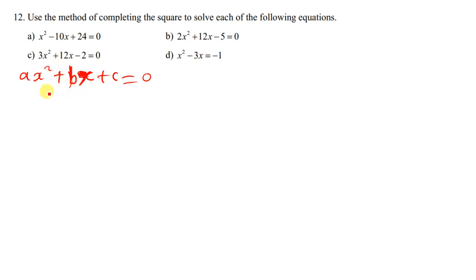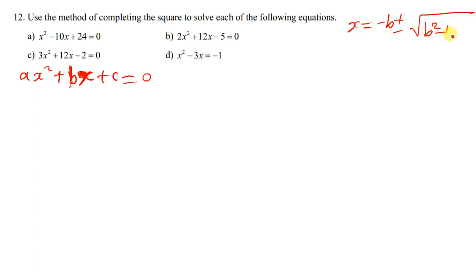So let's start completing the square of this. Whenever you complete the square of this, the result is always x is equal to negative b plus or minus the square root of b squared minus 4ac, then everything divided by 2a. When you complete the square of this expression, this is always the result.